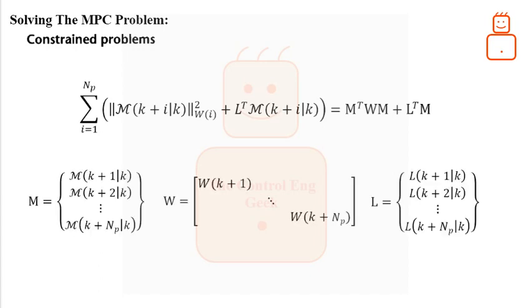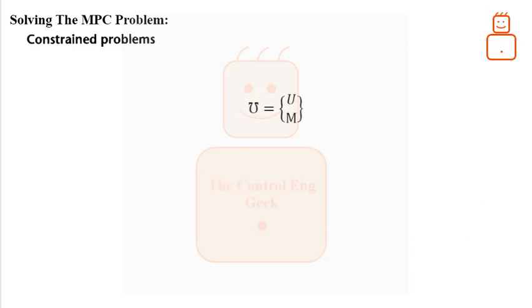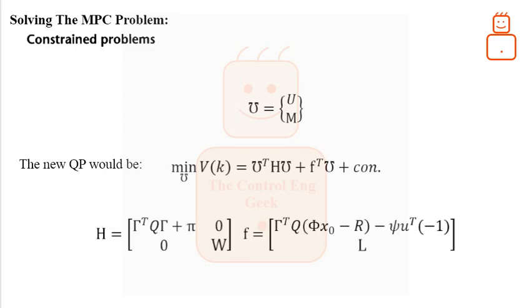Now as we have two variables in the MPC problem, namely the control moves as well as the slack variables, we need to reformulate our original MPC problem in term of these variables. Thus, the new MPC problem is given as. Where the new matrices of capital H and small case F are given by.